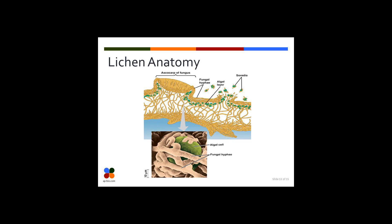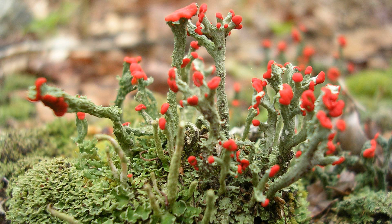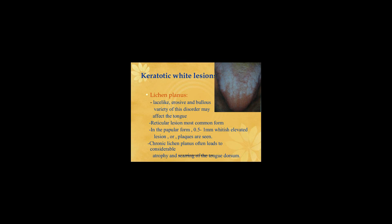The blue-green algae occur as symbionts in about 8% of the known lichens. The most commonly occurring genus is Nostoc. The majority of lichens contain eukaryotic autotrophs belonging to the Chlorophyta, green algae, or to the Xanthophyta, yellow-green algae. About 90% of all known lichens have a green alga as a symbiont, and among these, Trebouxia is the most common genus, occurring in about 40% of all lichens.